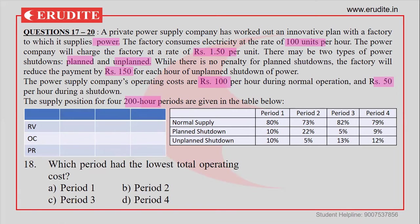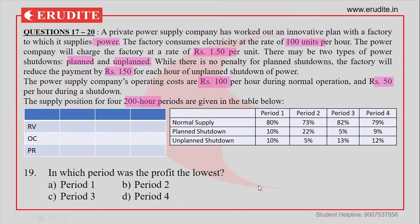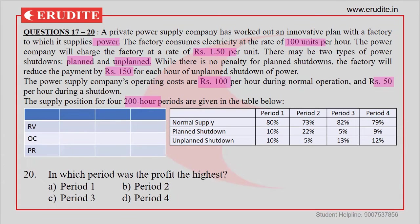The second question asks which period has the lowest total operating cost. The operating cost is ₹100 per hour for normal supply and ₹50 per hour for planned and unplanned shutdown. The third and fourth questions ask where the profit is lowest and highest respectively — again all comparative analyses.